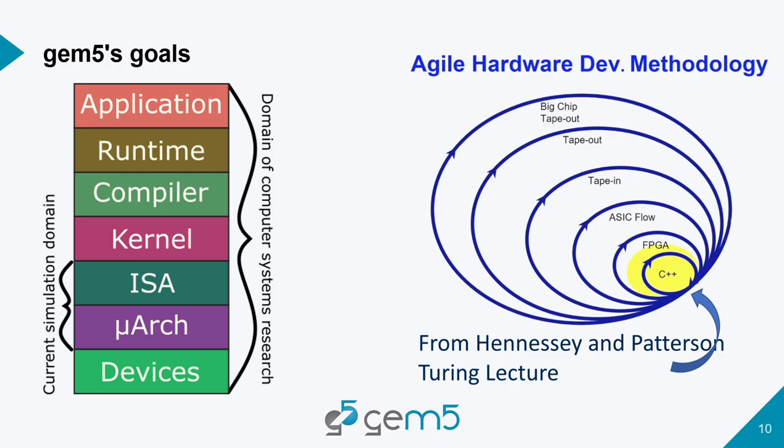GEM5's goals, as stated by Nate and Steve when they were doing M5, is to be a computer system simulator. A lot of computer architecture simulation really focuses on the ISA and the microarchitecture — new instructions, how the microarchitecture executes. But the domain of computer system research covers the entire stack from the application all the way down to devices. The goal of GEM5 is to enable research that touches all these layers of the stack.